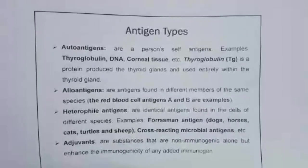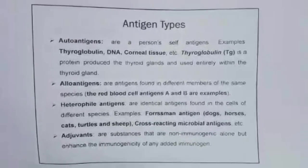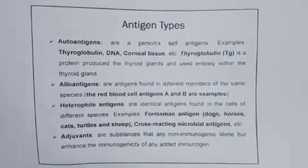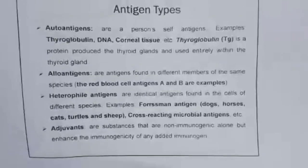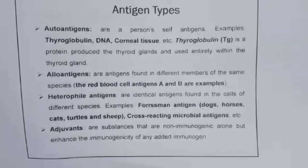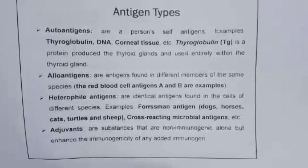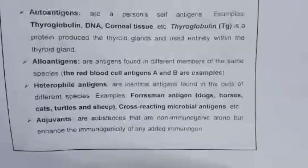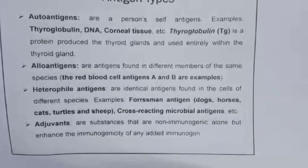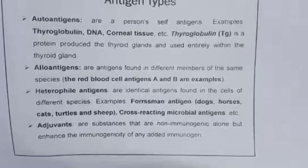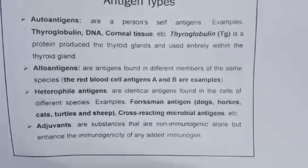Here you can see different types of antigens. Auto antigens are a person's self antigens — for example, DNA and corneal tissues. Allo antigens are antigens found in different members of the same species — for example, red blood cell antigens A and B. Heterofile antigens are identical antigens found in the cells of different species — for example, dogs, horses, cats, turtles, and sheep.